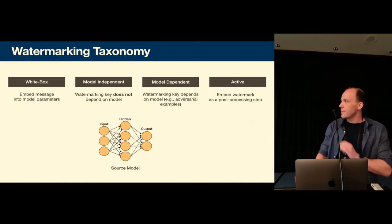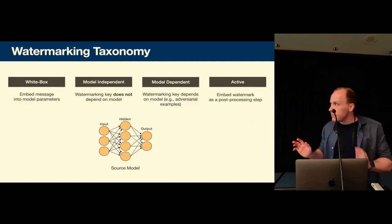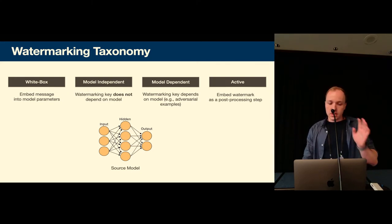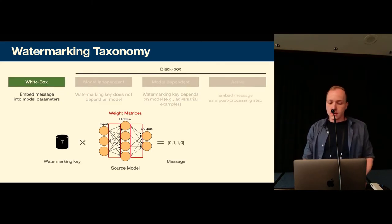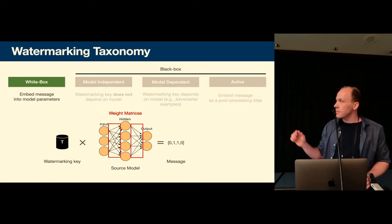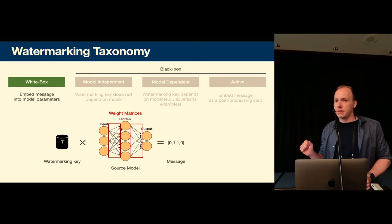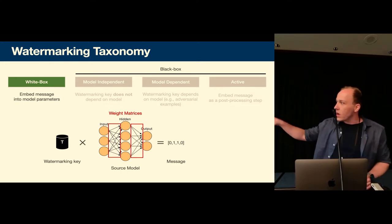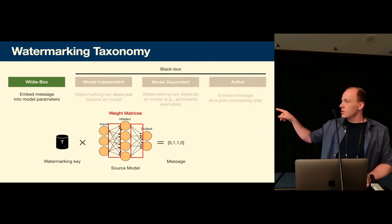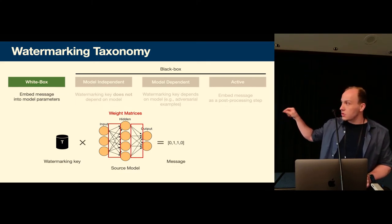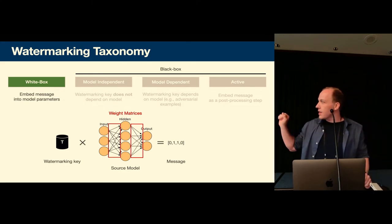Okay so we looked at a lot of schemes as I said and we derived a taxonomy for them. So we have found four categories. So one type of watermarking schemes we call white box watermarking schemes. Here the defender has access to the weights during verification. So they take the watermarking key, they take the model's weights and then from that they derive the message.